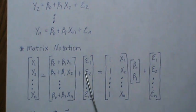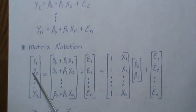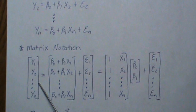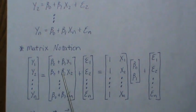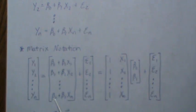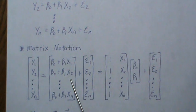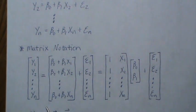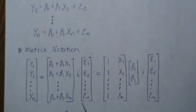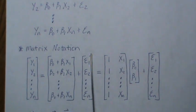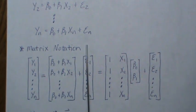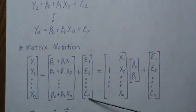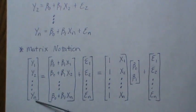We have each equation grouped. We have the y, or the dependent variable — the response variable — and we have the error term. There are a lot of repeats here with the betas. So we're going to take this into matrix form. A vector is a matrix with only one column, and if it has multiple columns it's called a matrix. So this is a vector of the error terms, and this is a vector of the y terms.